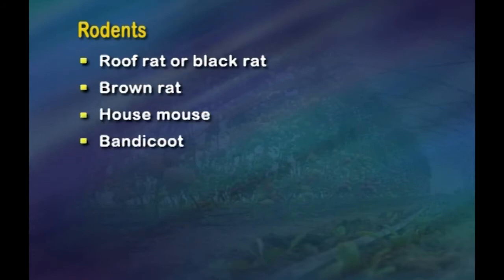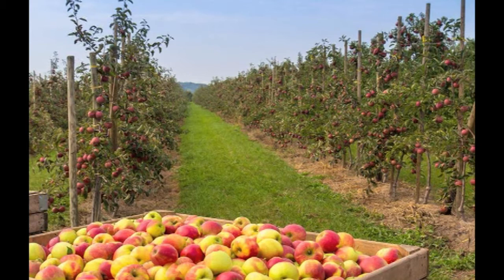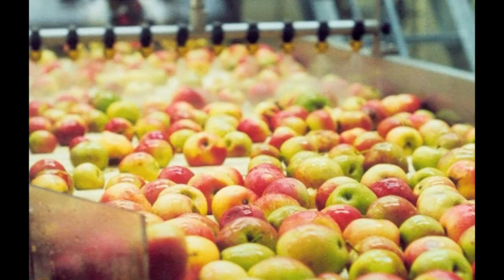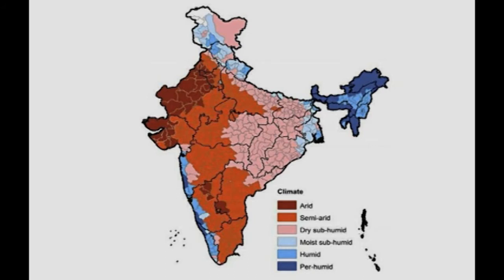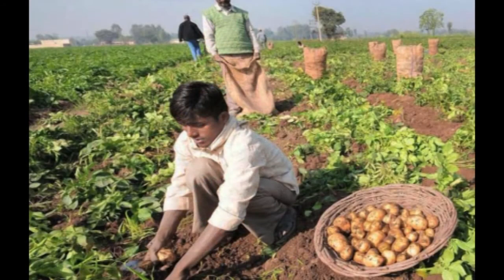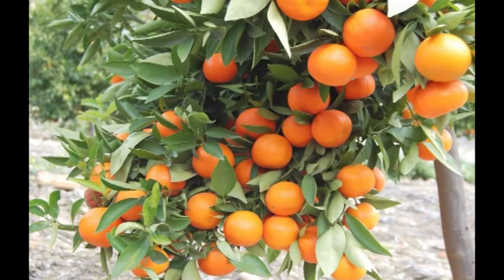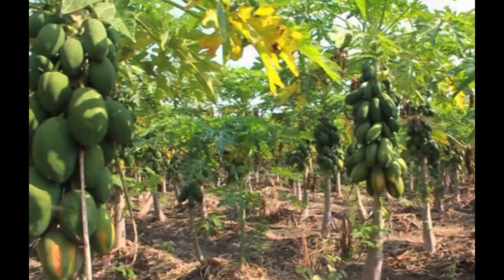Common rodents infesting food grains are roof rat or black rat, brown rat, house mouse and bandicoot. Coming to horticulture: current production of around 32 million tons accounts for about 8 percent of the world's fruit production. Diverse agro-climatic zones in the country make it possible to grow almost all varieties of fruits and vegetables in India. Eight major varieties of fruits dominate India's export markets, including mangoes, bananas, citrus fruits, apples, guavas, papaya, pineapples and grapes.